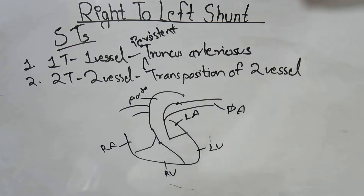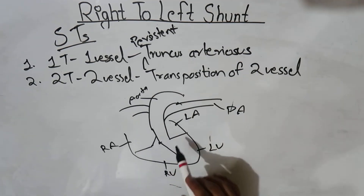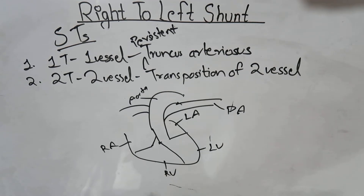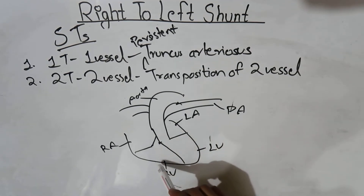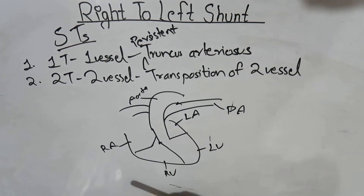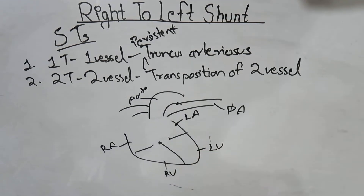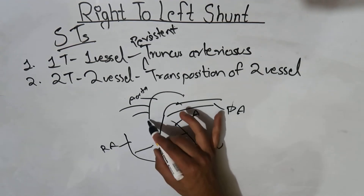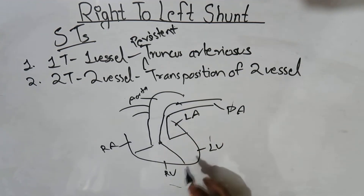These two great vessels — the pulmonary trunk and the aorta — are formed from truncus arteriosus by the formation of the aorticopulmonary septum. This aorticopulmonary septum undergoes spirulation, or twisting, which gives rise to the normal structure of the heart where the aorta comes from the left ventricle and the pulmonary trunk arises from the right ventricle. But if there is failure of this aorticopulmonary septum to spiral, then the aorta arises from the right ventricle and the pulmonary trunk arises from the left ventricle — so there is transposition of these two great vessels.